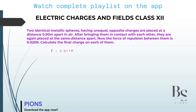The final charge on each of them is same. It doesn't matter because they are not asking for the initial charge. So the final charge is same on both of them. If it is Q on the first one, the second one also is Q. So if the final charge is same on each of them, we can directly use the Coulomb's law formula which is K Q squared by R squared.